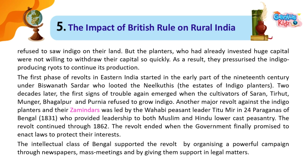Two decades later, the first signs of trouble again emerged when the cultivators of Saran, Tirhut, Munger, Bhagalpur and Purnia refused to grow indigo. Another major revolt against the indigo planters and their zamindars was led by the Wahhabi peasant leader Titu Mir in the 24 Parganas of Bengal in 1831, who provided leadership to both Muslim and Hindu lower-caste peasantry.